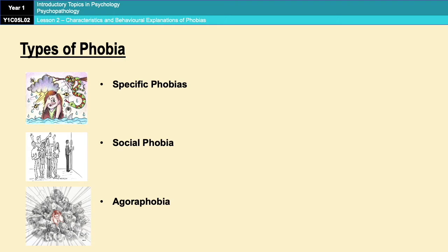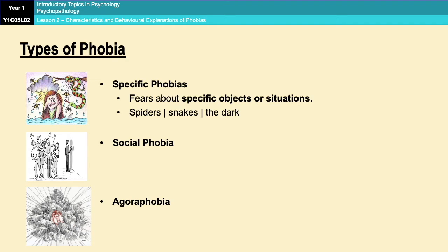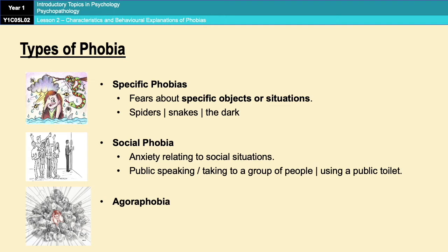Specific phobias are fears about specific objects or situations. Common ones include things like spiders, snakes, dogs, the dark, blood, and injections. Then you've got social phobias, which are phobias that relate to social situations — things like public speaking, talking to a group of people at a party, or using a public toilet. All of those are social situations and come under social phobia.